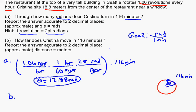Part B asks a different question: not how many radians did she turn through, but how far did she move in meters. This is where we use the fact that she sits 18.8 meters from the center, which creates the radius of the circle. The distance she traveled is the arc length along the circle. The arc length formula is S = R times theta, where R is 18.8 meters and theta must be in radians. We already have theta in radians, so we're ready to go.